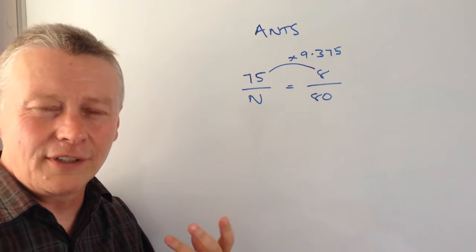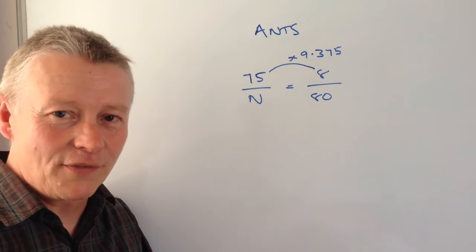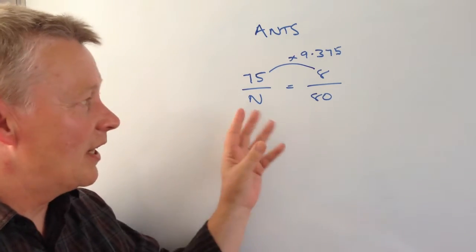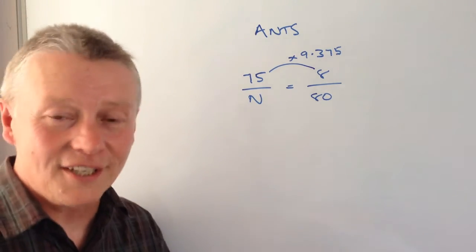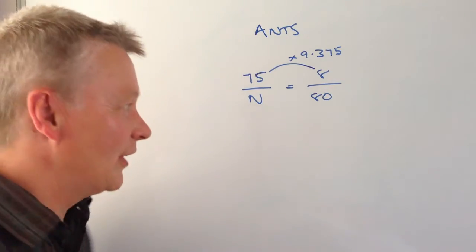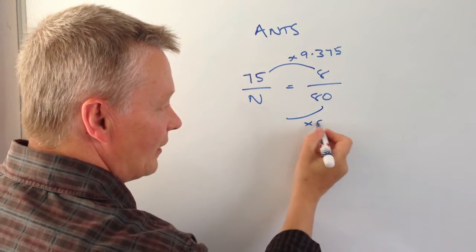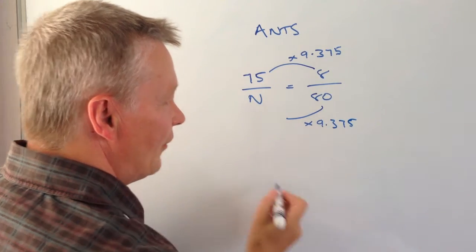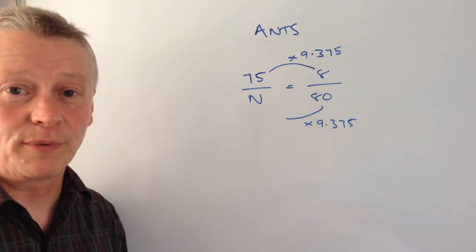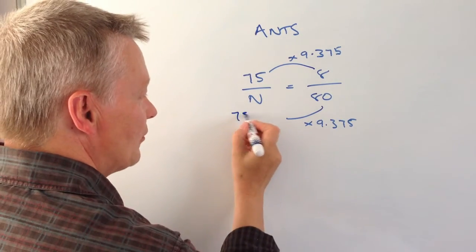They don't give you very intuitive numbers for these sorts of questions because it's more about really isolating the English and working through the English. But if you use equivalent fractions, if I multiply that by 9.375, then I get the total population of the ants which was 750.